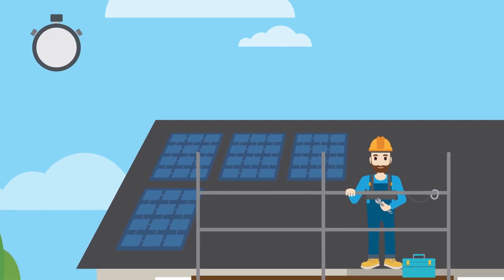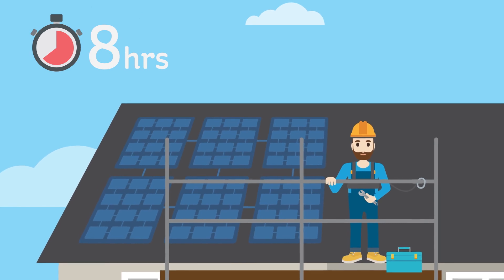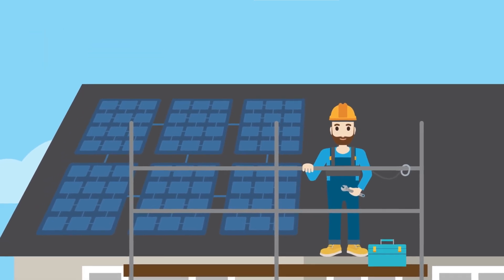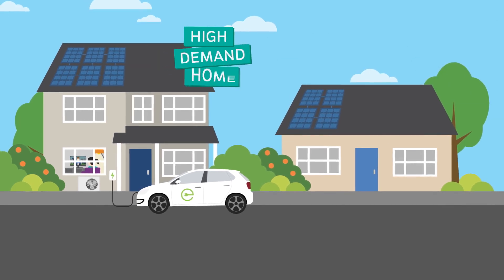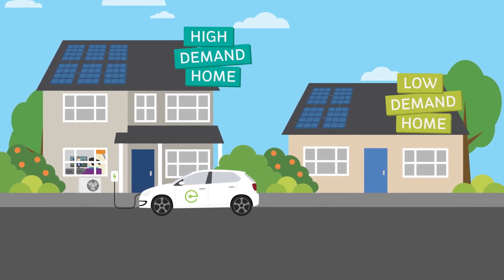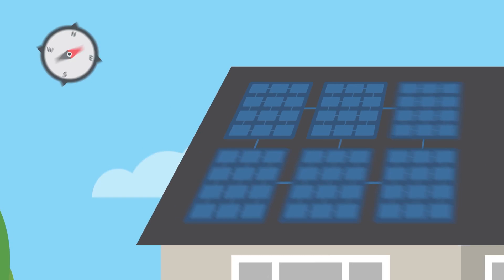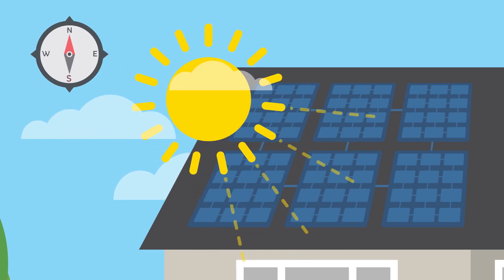A solar PV installation normally takes one day and must be completed by a registered contractor. To avoid export to the grid, the solar PV array should be sized to meet the typical demand in the home. Solar PV works best on roofs with a southerly aspect.